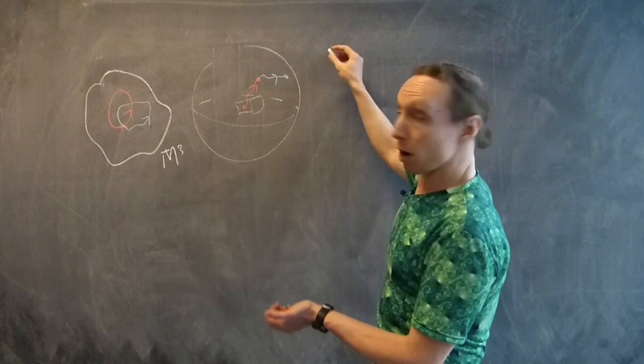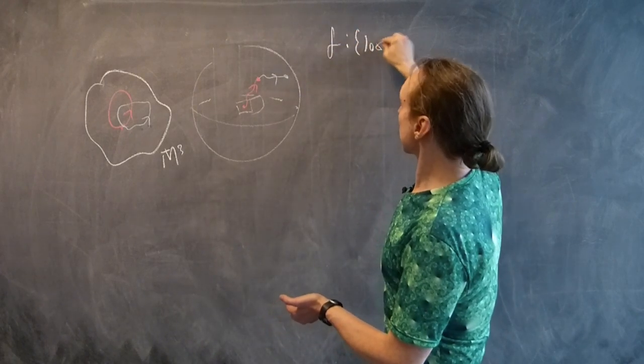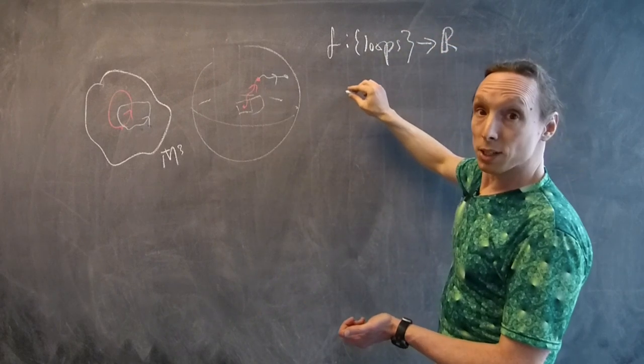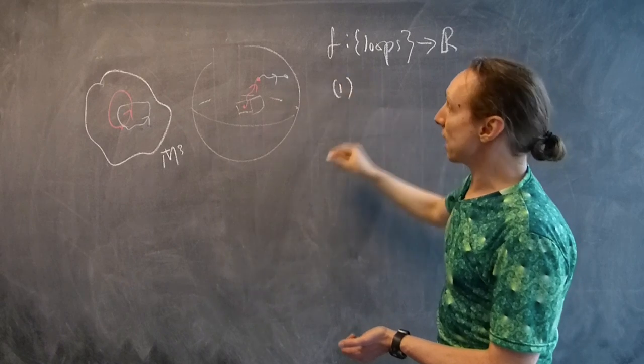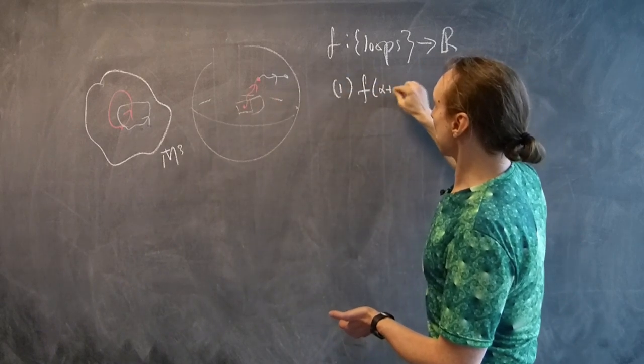So, a cohomology class is a function from loops to, say, the real numbers, which has two important properties. The first property is it obeys this addition. If you take two loops, alpha and beta, and concatenate them in this way,